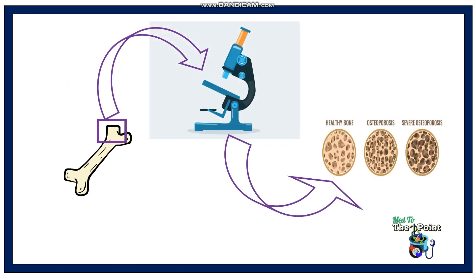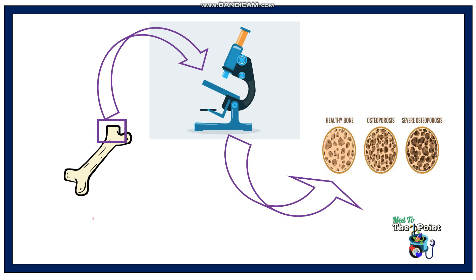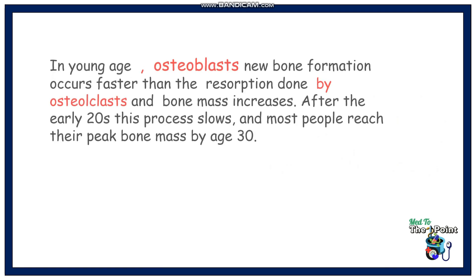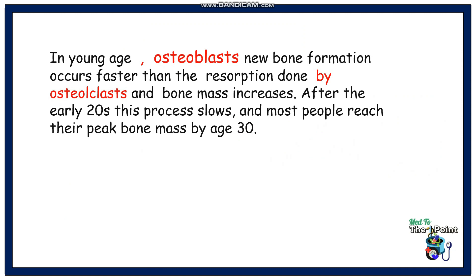When osteoporosis occurs, the holes and spaces in the honeycomb are much larger than in healthy bone. Bones are in a constant state of renewal — new bone is made and old bone is broken down. In young age, osteoblasts' new bone formation occurs faster than the resorption done by osteoclasts, and bone mass increases.